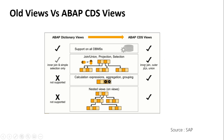In ABAP CDS views, we have inner join, outer join, and unions. We will be working with inner joins and outer joins mostly. Additionally, calculations, expressions, segregation, and grouping are all supported in ABAP CDS views but not in ABAP dictionary views. ABAP dictionary views use a graphical tool in SE11 with limited options, whereas ABAP CDS views are code-based with many more features. Nested views — a view under another view — are also possible in ABAP CDS views but not in ABAP dictionary views.